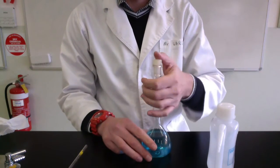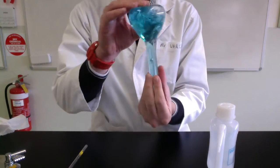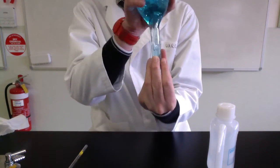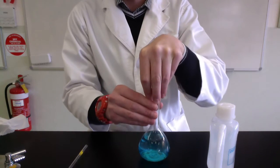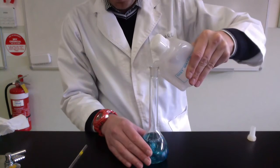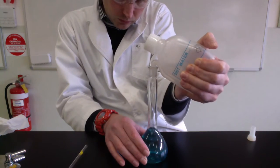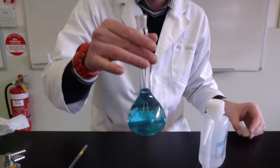This time I'm going to invert and homogenise. So I'm stoppering, shaking it upside down. Do that a few times. And now, until I just get into the neck, I'm making sure I'm not going over the etch line.